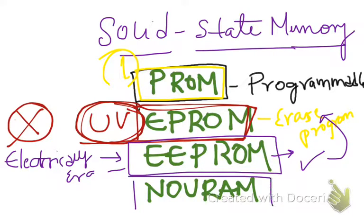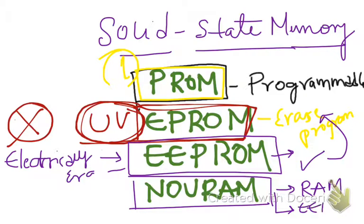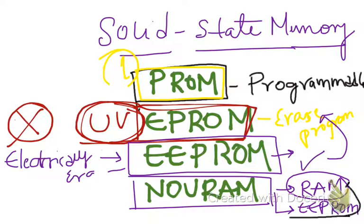NOVRAM is a non-volatile RAM. It is a combination of a RAM and an EEPROM. So when a power failure happens, the data in the RAM is stored in the EEPROM, and when the power comes back, the data is shifted back into the RAM again. In this way, we have these types of solid state memories other than the conventional ROM and RAM that we have always been taught about.